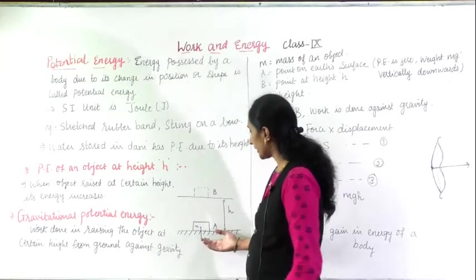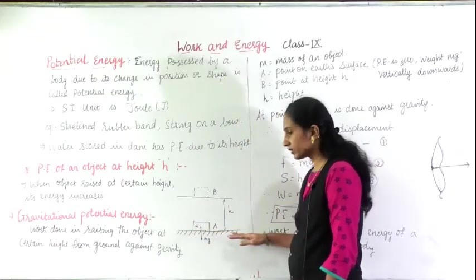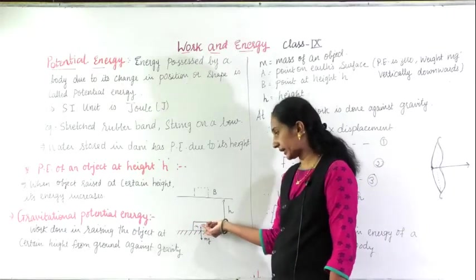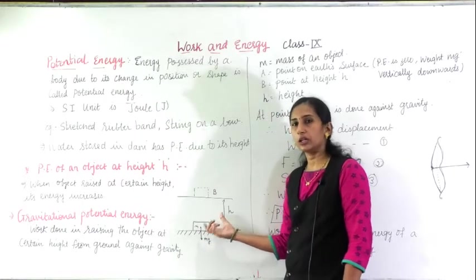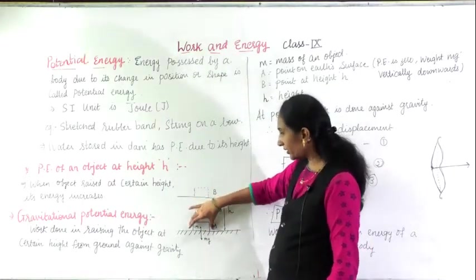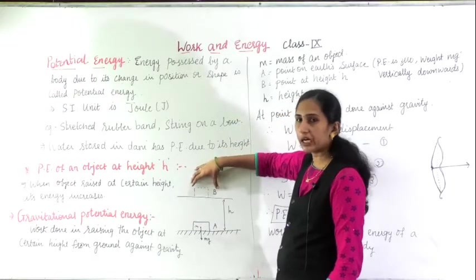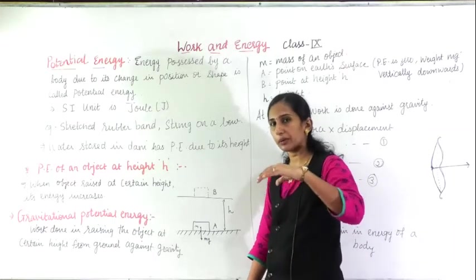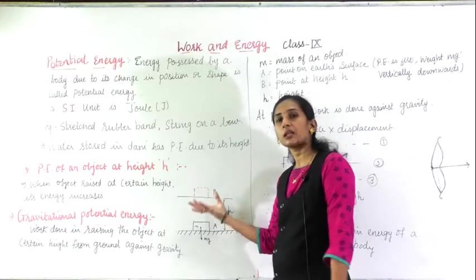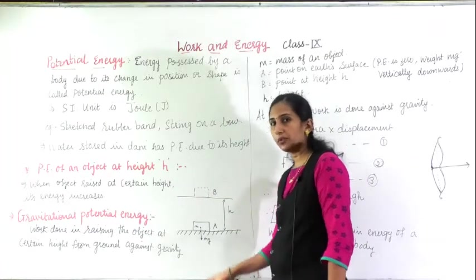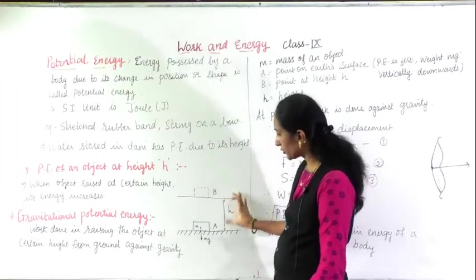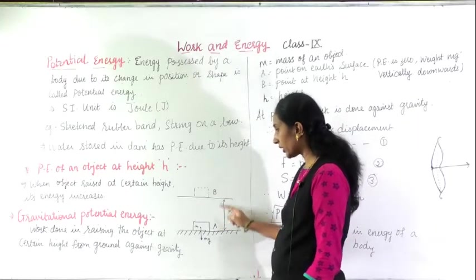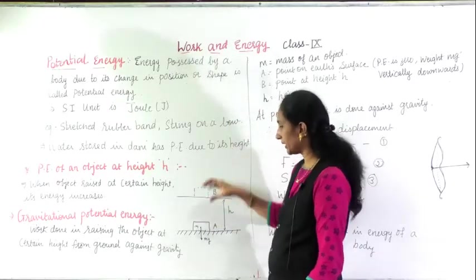Here, the diagram I have drawn — this is the surface of the ground. On this, a block is kept having mass m at point A on the ground. Now I have lifted this and kept the block at height B. From the ground I have lifted the object and kept it at height B. You can consider your table also — from the ground I have lifted it and kept it on the table, and the height between these two is h. Point A is lying on the ground, point B is lying on the table after picking up and keeping.